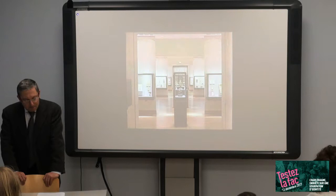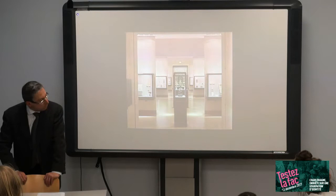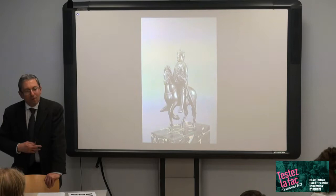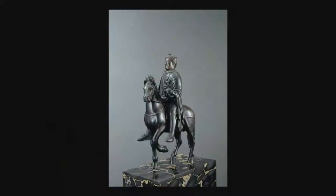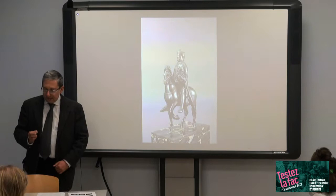Maintenant, si nous nous demandons qui est ce cavalier, les choses se compliquent. D'autant plus que s'il y a des gens parmi vous qui ont un jour posé leur postérieur sur une selle, ils peuvent admirer la virtuosité du personnage. Il monte à cru, sans selle, et conduit sa monture sans guide, sans rênes. Ce qui nous donne immédiatement une indication sur la période à laquelle peut avoir été fabriquée la statuette, car l'une des premières questions que doit toujours se poser un historien est celle de l'inscription dans la chronologie.